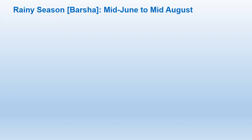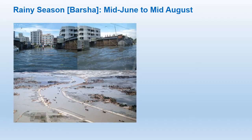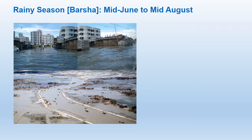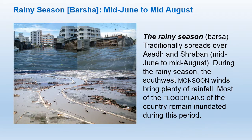After summer comes the rainy season, called Barsha, which starts from mid-June to mid-August. In Barsha, a lot of devastating things happen — rain and flooding. Bangladesh is very much vulnerable to floods, and a lot of people suffer. Houses and paddy fields are destroyed and many crops are lost. This season has two months: Ashar and Srabon.